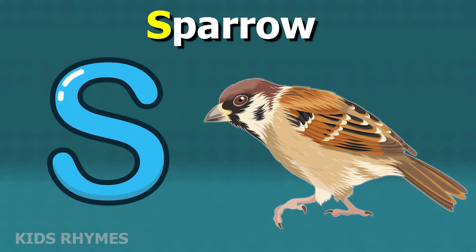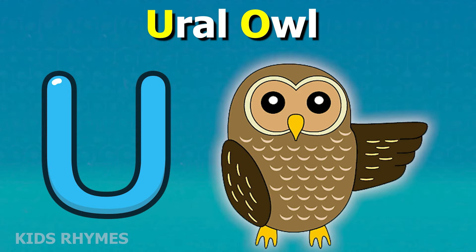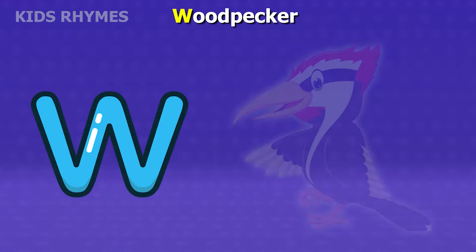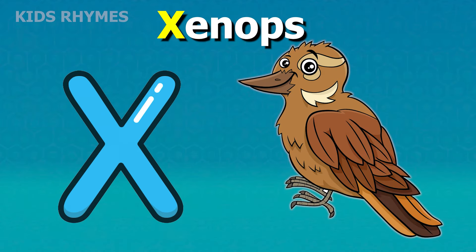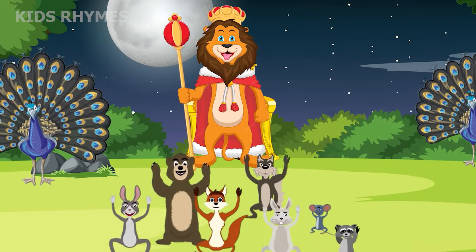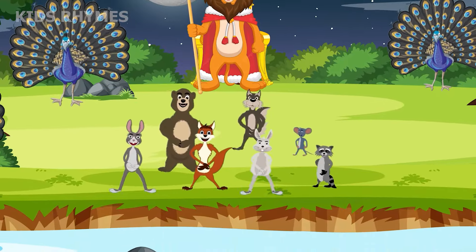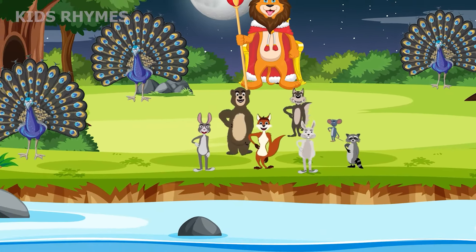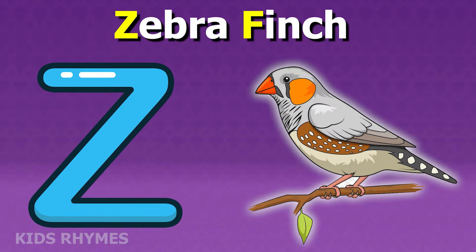S for sparrow, T for turkey, U for umbrellabird, V for vulture, W for woodpecker, X for xenops, Y for yellow warbler, Z for zebra finch.